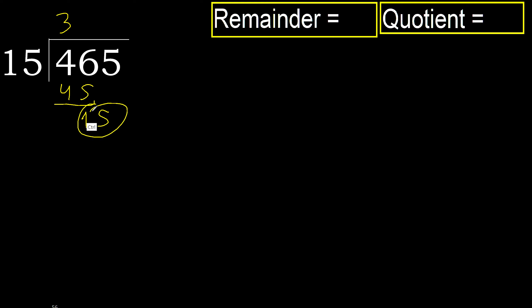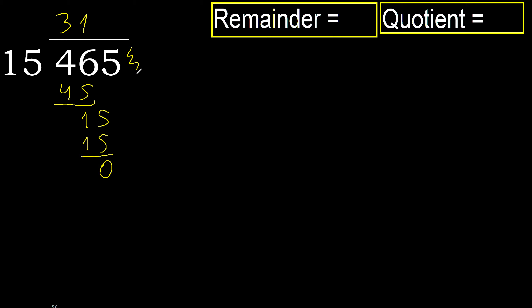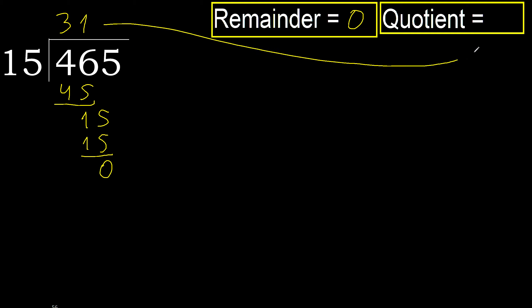Next, bring down 15. 15 multiplied by 1 is 15 — 15 is not greater. 15 minus 15 is 0. Next digit — that is not a number, therefore finish. Done.